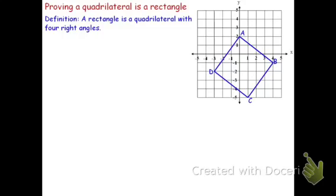I'm going to find the slopes of all four segments. I'll show that the segments that come together have opposite reciprocal slopes, which therefore make right angles. I'll need to do this four times to show that we have four right angles and thus a rectangle. So let's start by finding the slope triangles. If we find the slope triangles of all four sides, I can therefore look at the slopes of the individual pieces.